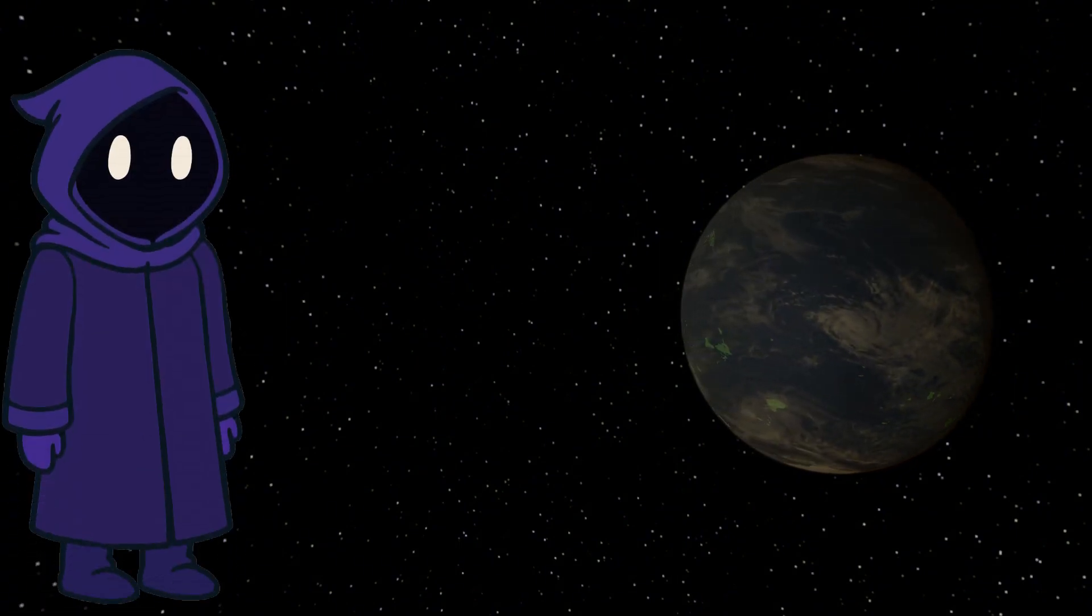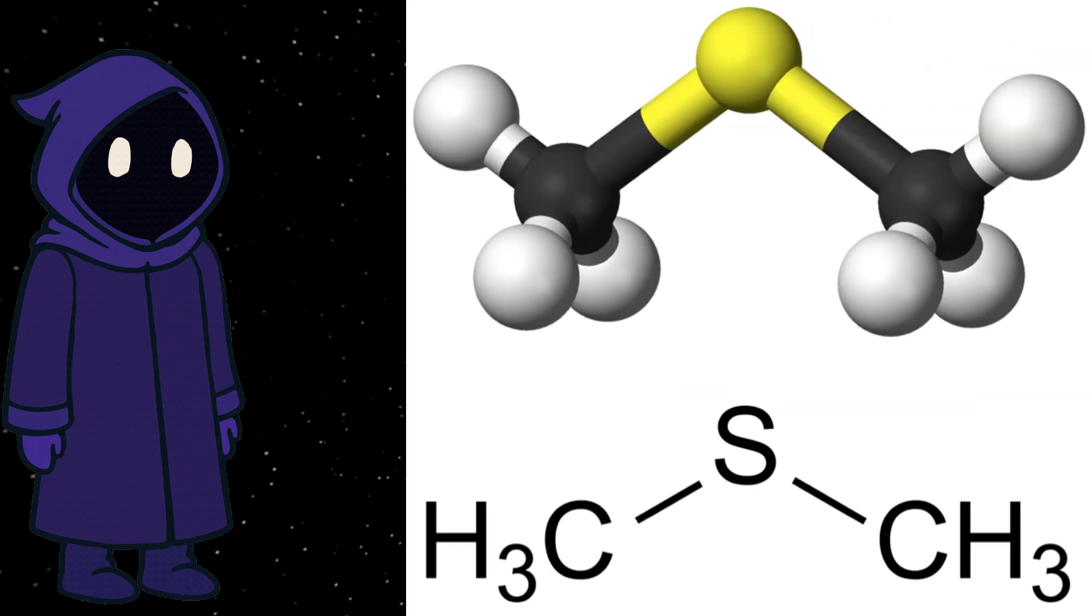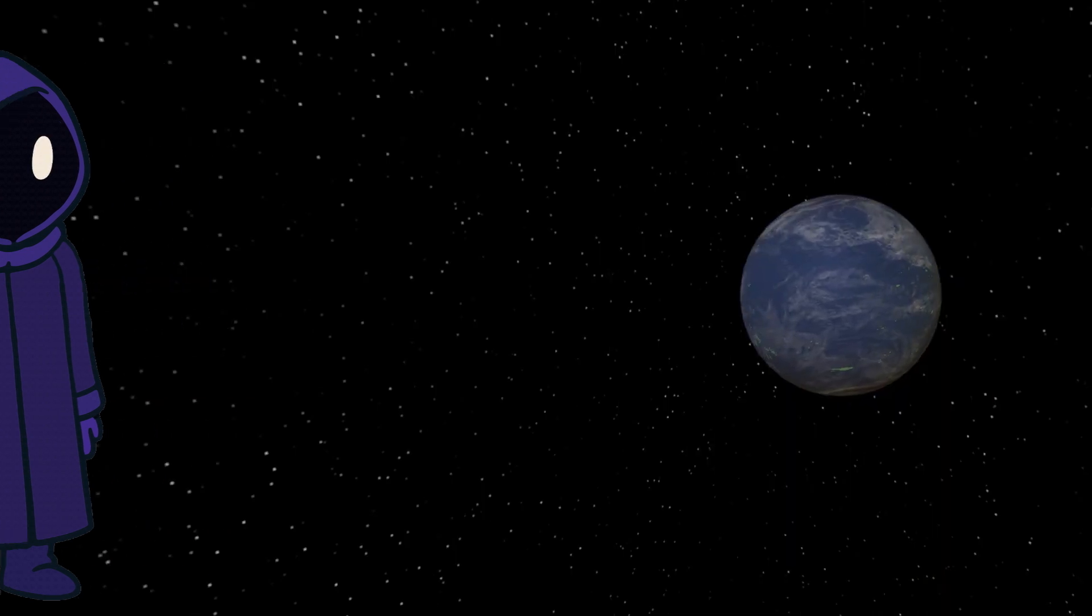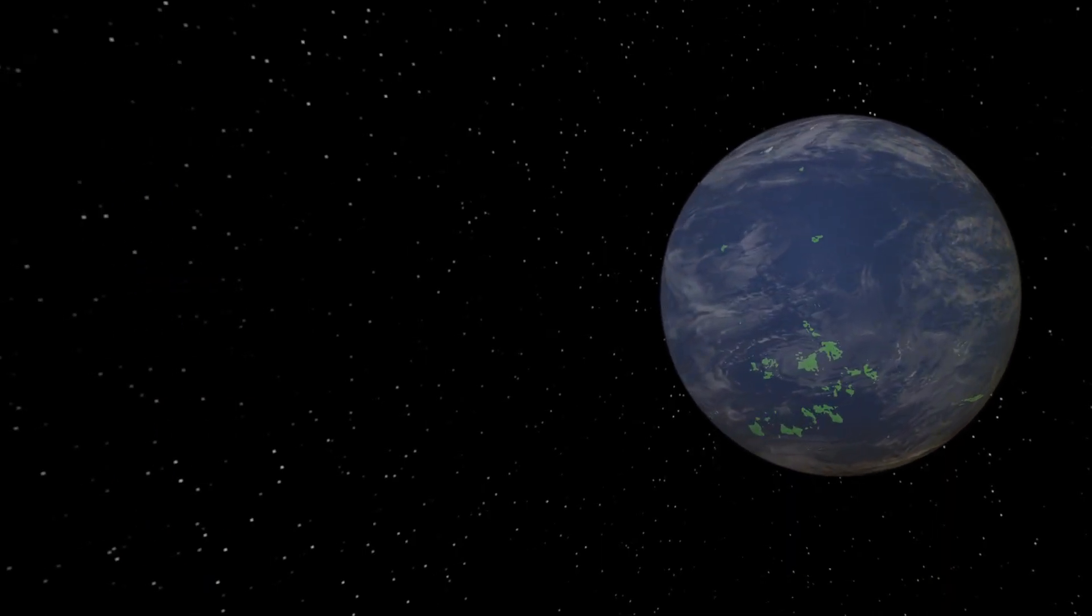The latest update for K2-18b is a brand new discovery and just happened about a week ago at the time of me writing the script. A team from Cambridge University discovered the existence of dimethyl sulfide in its atmosphere. The significant part is that this chemical only exists in one way naturally on Earth and this is from life, specifically marine bacteria and phytoplankton.